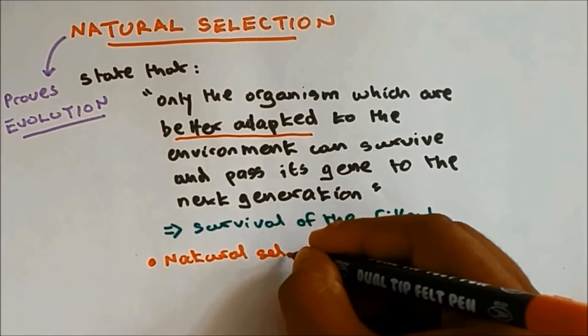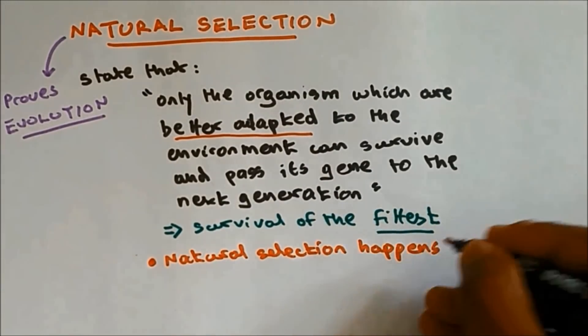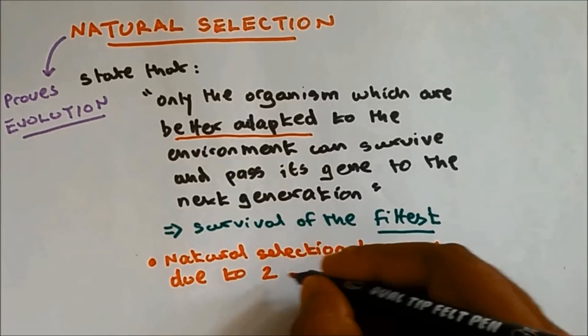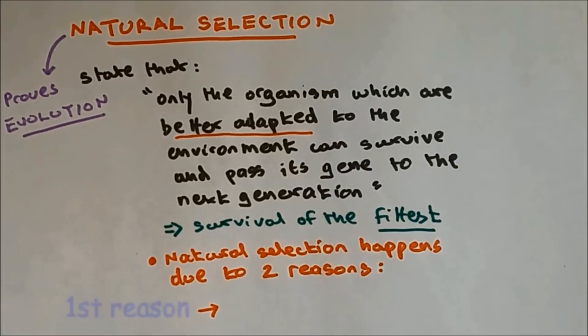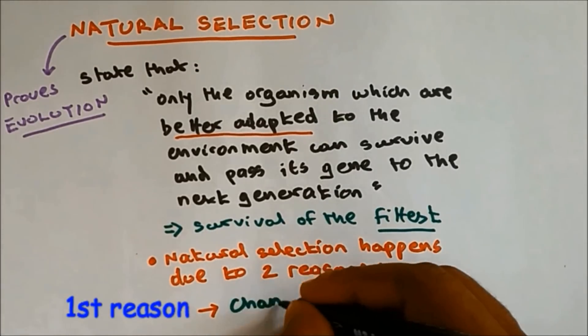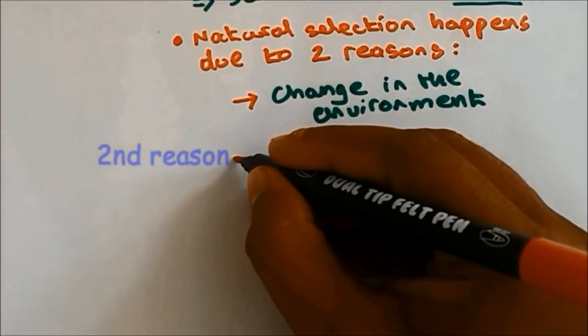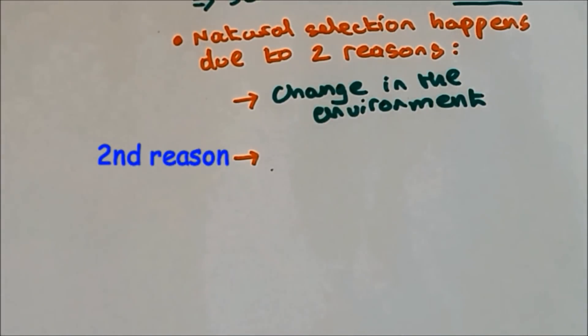Natural selection happens due to two reasons. It needs two factors for it to happen. It's because of change in the environment. Number two is because of mutation.